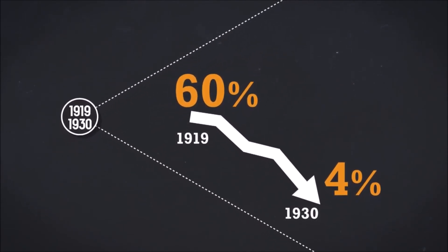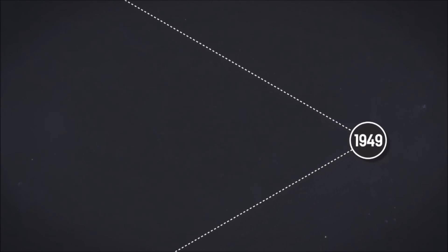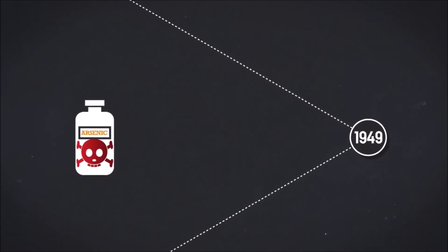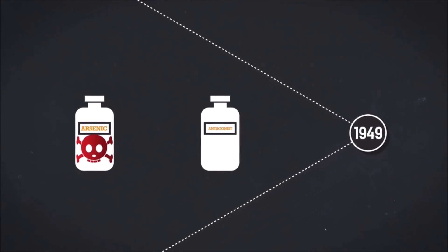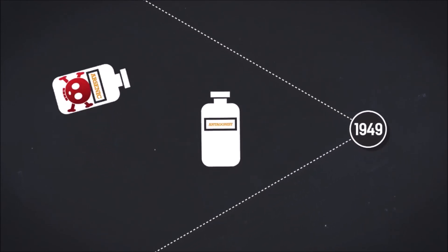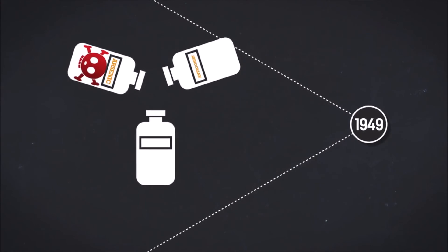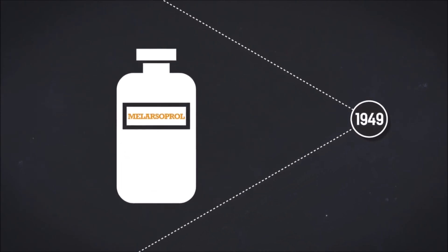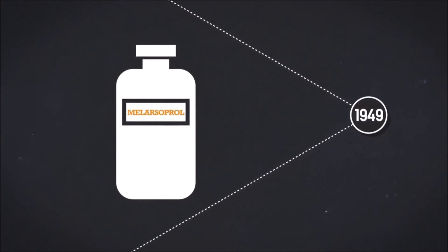In 1949, Swiss chemist Ernst Friedheim came up with the idea of combining an arsenic derivative with an antagonist used against arsenic-based gases during World War II. His drug, melarsoprol, is still used, albeit rarely, in the advanced stage of the disease.